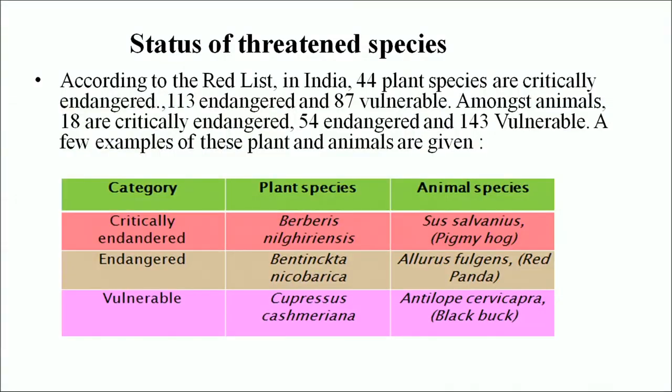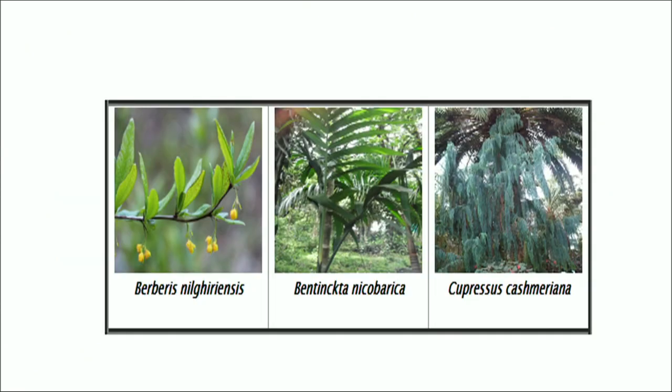Data deficient: a taxon is data deficient when there is inadequate information to make any direct or indirect assessment of its risk of extinction. Not evaluated: a taxon is not evaluated when it has not yet been assessed against the above criteria. In India, according to the Red List, 144 plant species are critically endangered, 113 endangered and 87 vulnerable. Among animals, 18 are critically endangered, 54 endangered and 143 vulnerable. Pictures of these plants and animals are shown.